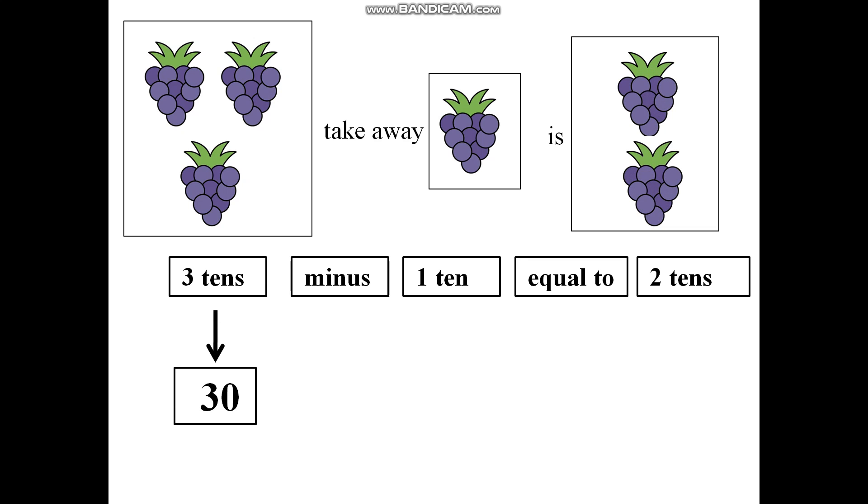So, three tens means thirty minus symbol. You are already aware. One ten means ten. Equal to symbol we know. That will give me two tens means twenty. So, I can say, thirty minus ten is equal to twenty.